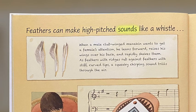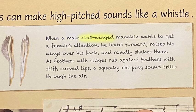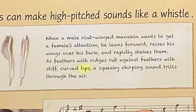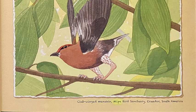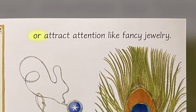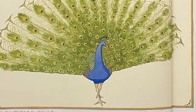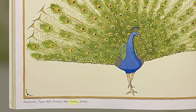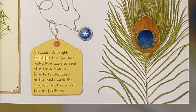Feathers can make high-pitched sounds like a whistle. When a male club-winged manakin wants to get a female's attention, he leans forward, raises his wings over his back, and rapidly shakes them. As feathers with ridges rub against feathers with stiff, curved tips, a squeaky chirping sound trills through the air. Or attract attention like fancy jewelry. A peacock's bright, beautiful tail feathers make him easy to spot. At mating time, a female is attracted to the male with the biggest, most colorful fan of feathers.